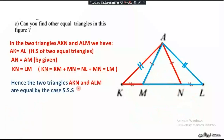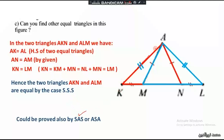The two triangles AKN and ALM are equal by the case side-side-side. We could also use side-angle-side: this side equals this side, this side equals the side in the blue triangle, and this angle is homologous to that angle — so the two triangles are also equal by the method side-angle-side.